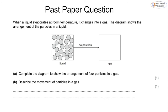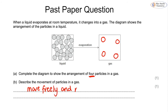Now for some past paper questions. First: when a liquid evaporates at room temperature it changes into a gas. Given a diagram of particle arrangement in a liquid, we need to complete it to show at least four particles in a gas. The answer shows four separate circles spread out with no touching. Make sure to read the question carefully for the exact number of particles required — this is a common mistake. For the next mark, describe the movement of particles in a gas: they move freely and randomly, in any direction at any speed, without touching each other.